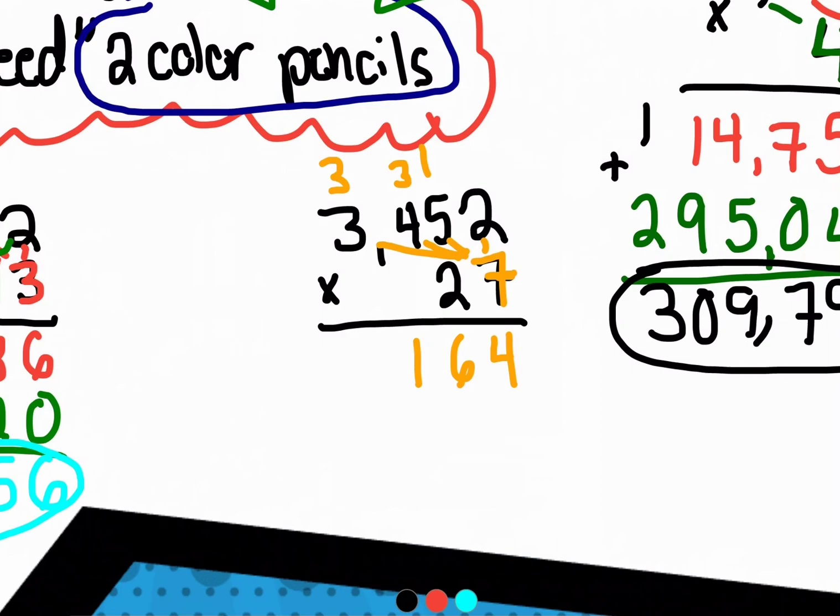Seven times three is 21, 21 plus three is 24. Sorry, I had a little brain slip.